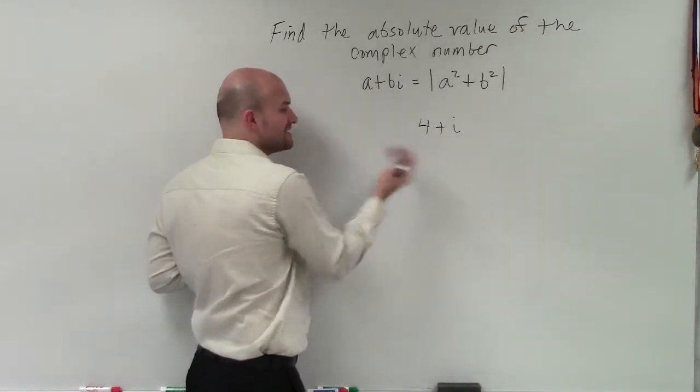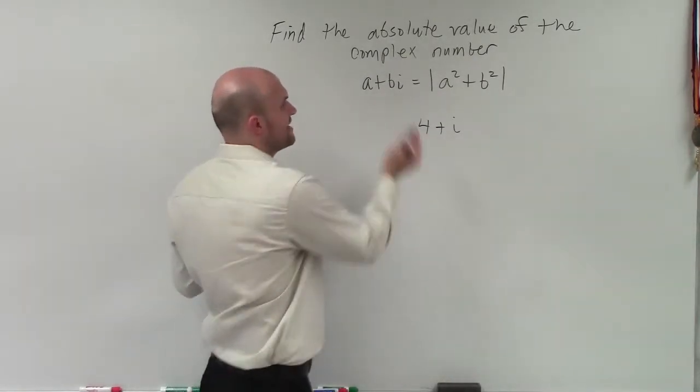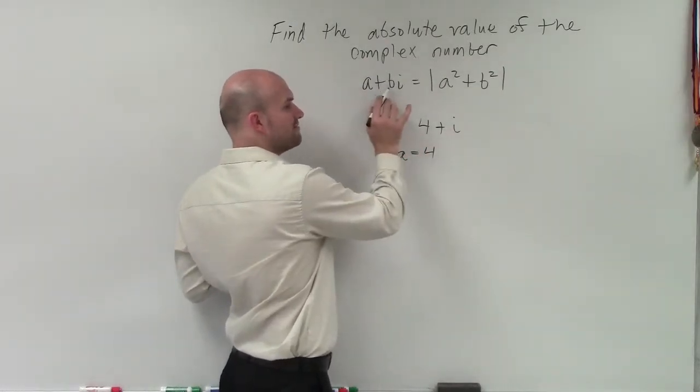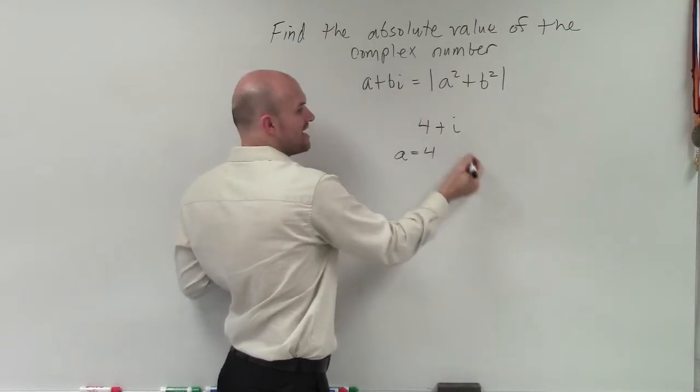So this is a complex number, but in this case, it gets a little tricky sometimes when students are trying to find and understand what b is. We know that a represents 4, but here you remember, b is what value is being multiplied by i. Well, we only have i,